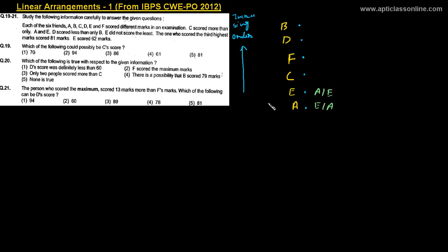So the final arrangement in increasing order of marks is: A, E, C, F, D, B — where B is the highest and A is the lowest. The one who scored the third highest marks scored 81 marks. Third highest is F, so F has 81 marks. E scored 62 marks.